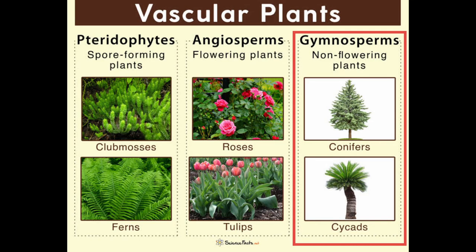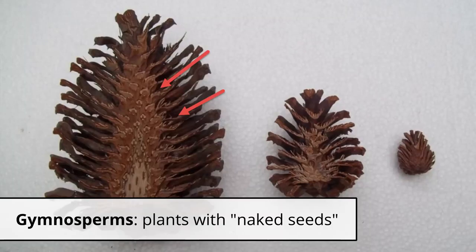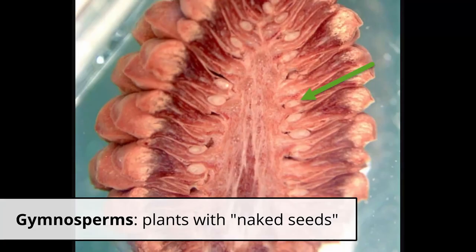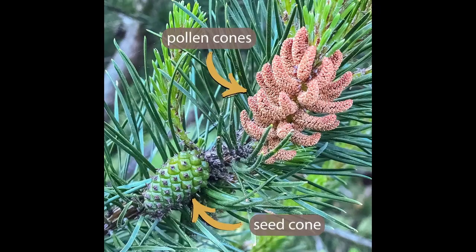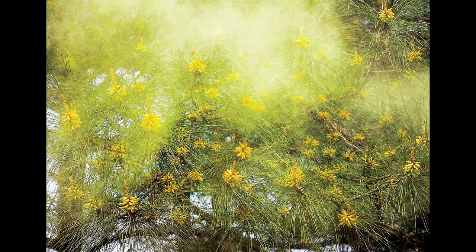I covered gymnosperms in a separate video, which I'll link, but to summarize, they're plants with naked seeds that aren't covered by another structure. Gymnosperms depend on the wind for pollination. The wind has to carry pollen from the male cones to the female cones before they get fertilized, so the success rate of pollination really comes from chance. You produce as much pollen as possible and hope that it hits a female cone.